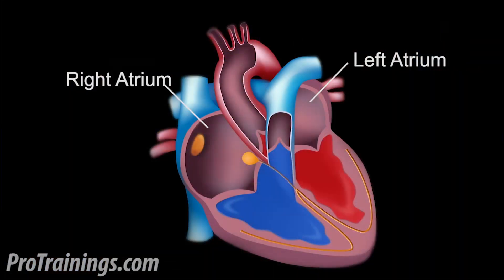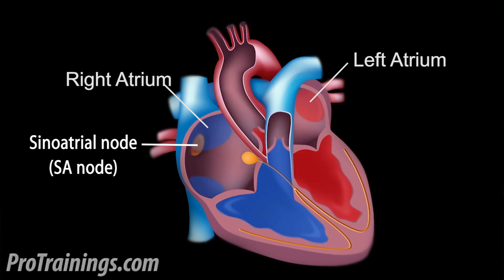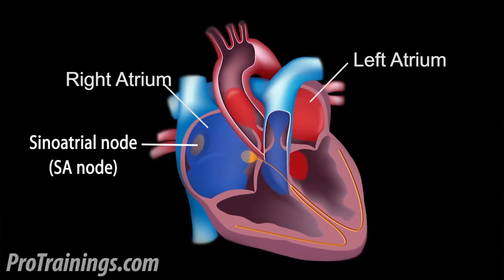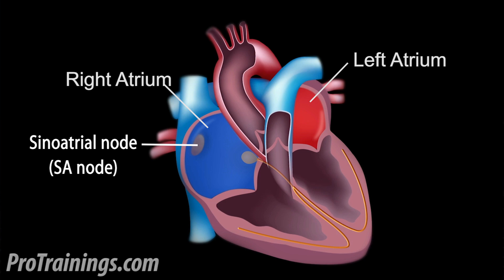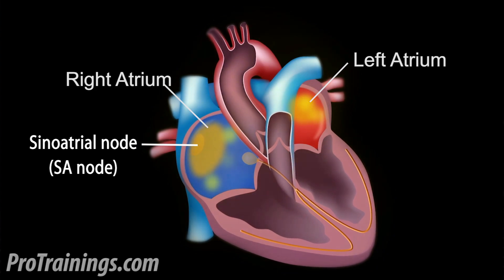A special part of the heart located in the superior aspect of the right atrium, called the sinoatrial node — or SA node for short — works like an internal dynamic pacemaker. When the heart is working correctly, it generates an electrical impulse that travels through the myocardium in an organized and deliberate fashion, at a rate of 60 to 100 times per minute.